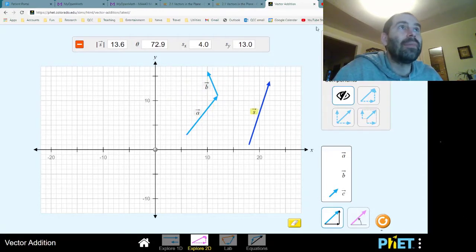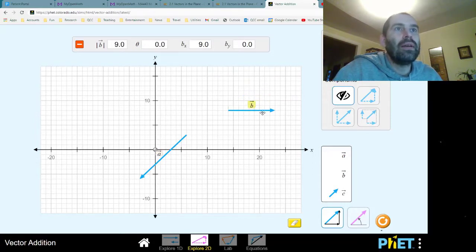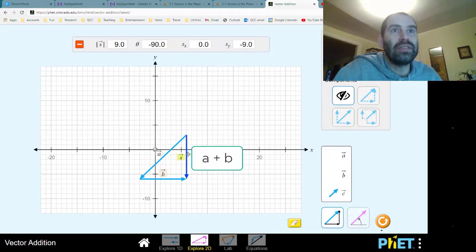So again, if I pointed a in this direction and b like this, I'll just put b so that its tail is coming off the tip of a. And then I look at the resulting vector. Notice it joins the sum, joins the tail of a to the tip of b. So this vector s that we're seeing here, that's the sum of a and b.